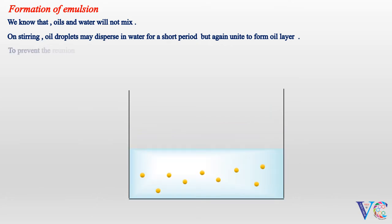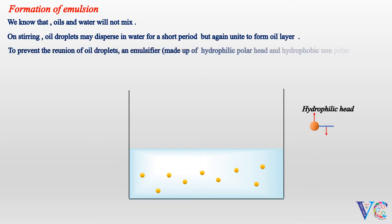To prevent the reunion of oil droplets, an emulsifier, made up of hydrophilic polar head and hydrophobic non-polar tail, is added. Then the emulsion is stabilized due to the formation of micelles.